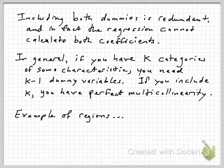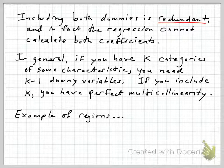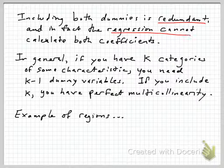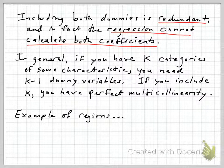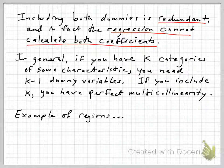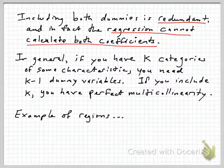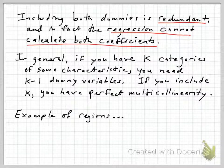If you include both dummies in the regression, it's clearly redundant — they're telling you exactly the same information, just in flip mathematical form. The regression simply cannot calculate two different coefficients in this case. In most regression software, one or the other dummy variable is simply going to be dropped. There won't be an estimate of the slope. It doesn't make sense to come up with a separate male and female effect at the same time because one is exactly the same information as the other, except the inverse.